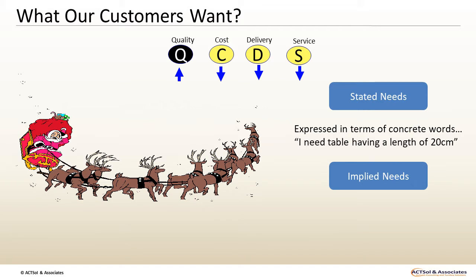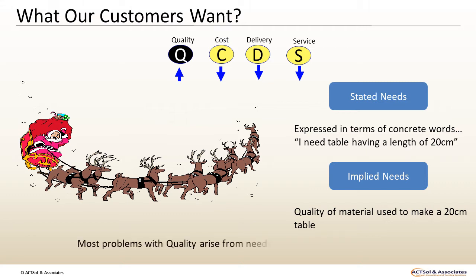An implied need can be the quality of material used to make a 20 cm table, but you are not really satisfied with it. Although it has the required length, you are not satisfied with its material, or the way you were treated during purchase, or its delivery. Most problems with quality arise from needs that are implied — these are promises assumed in the mind of the person receiving the product or service. These needs would have been missed during quality planning and need to be addressed at the planning stage itself.